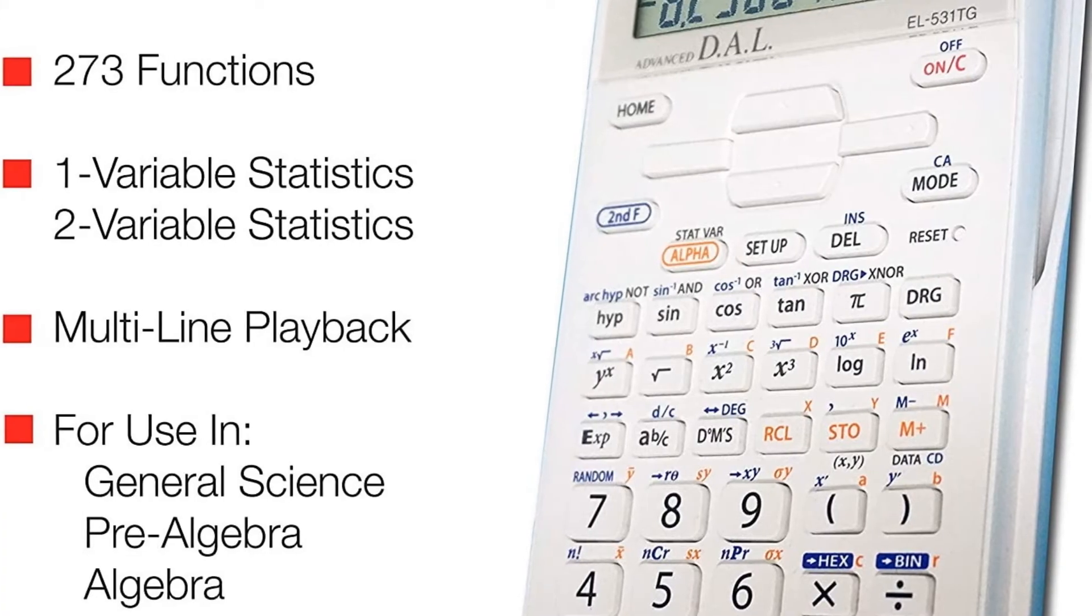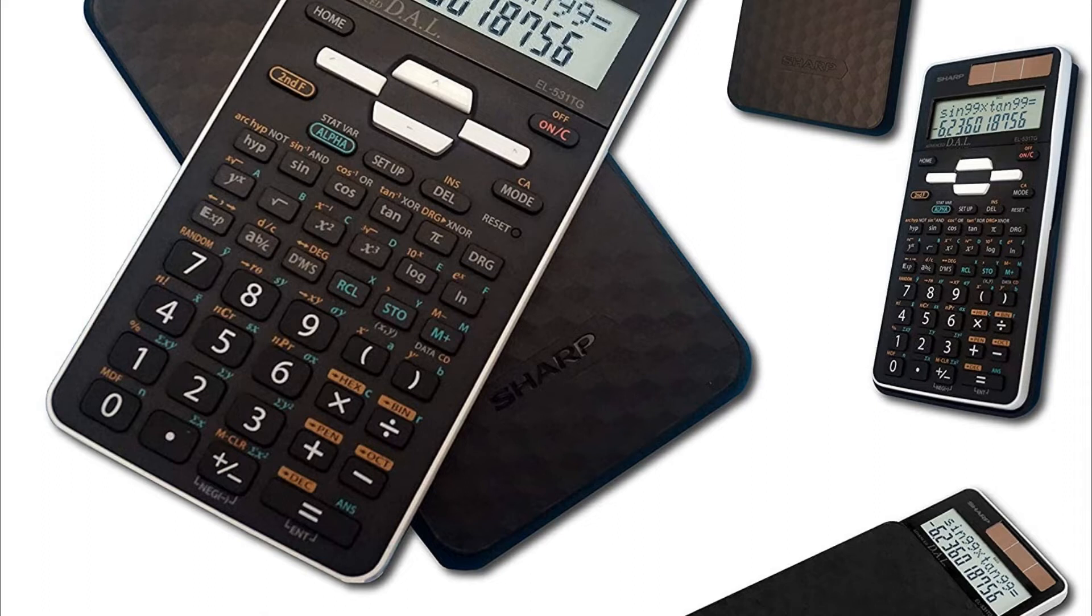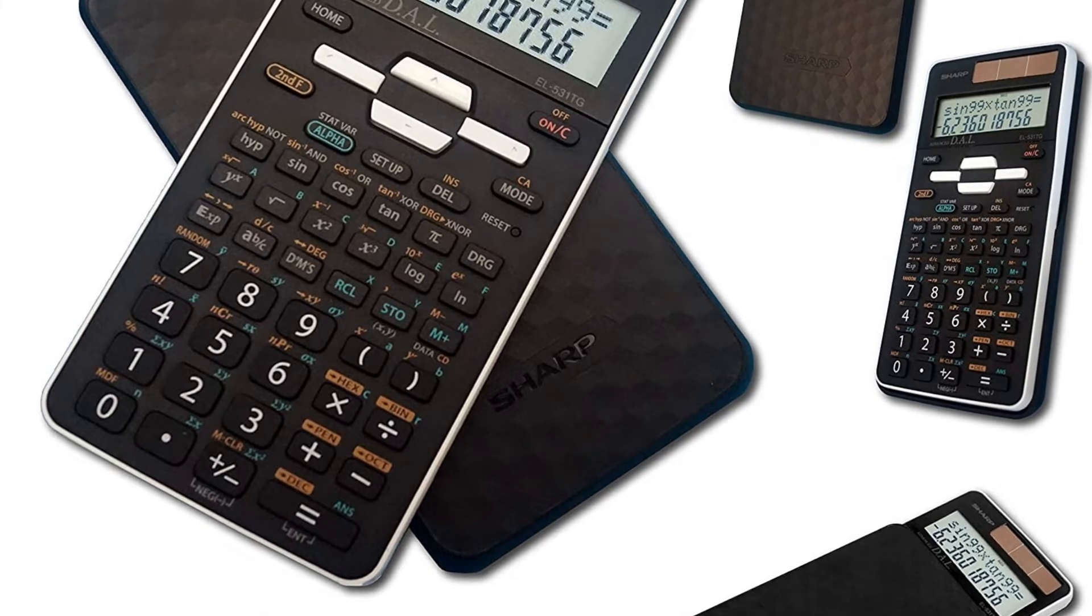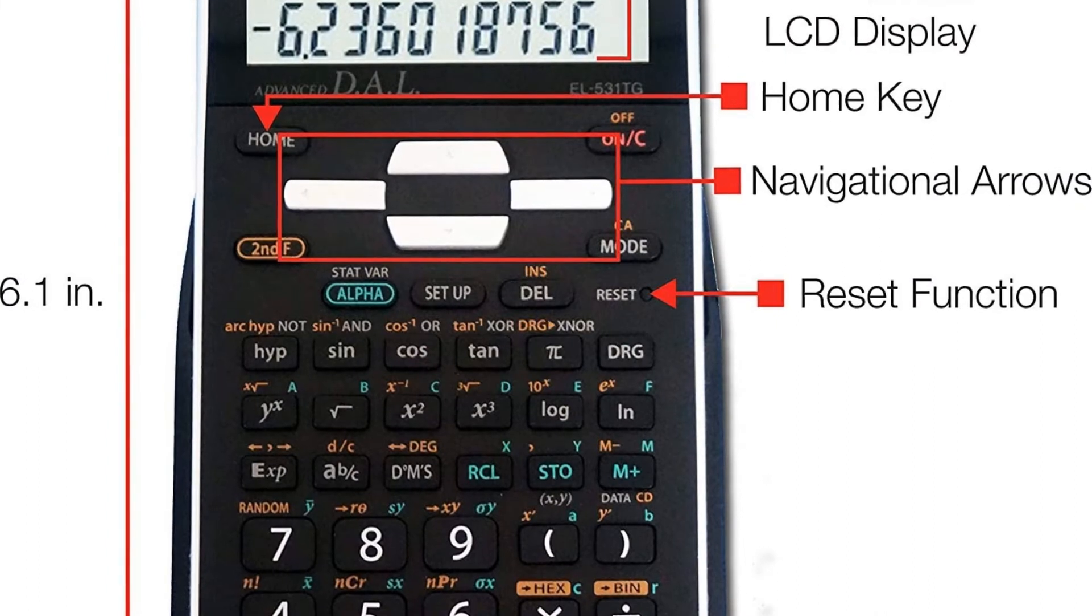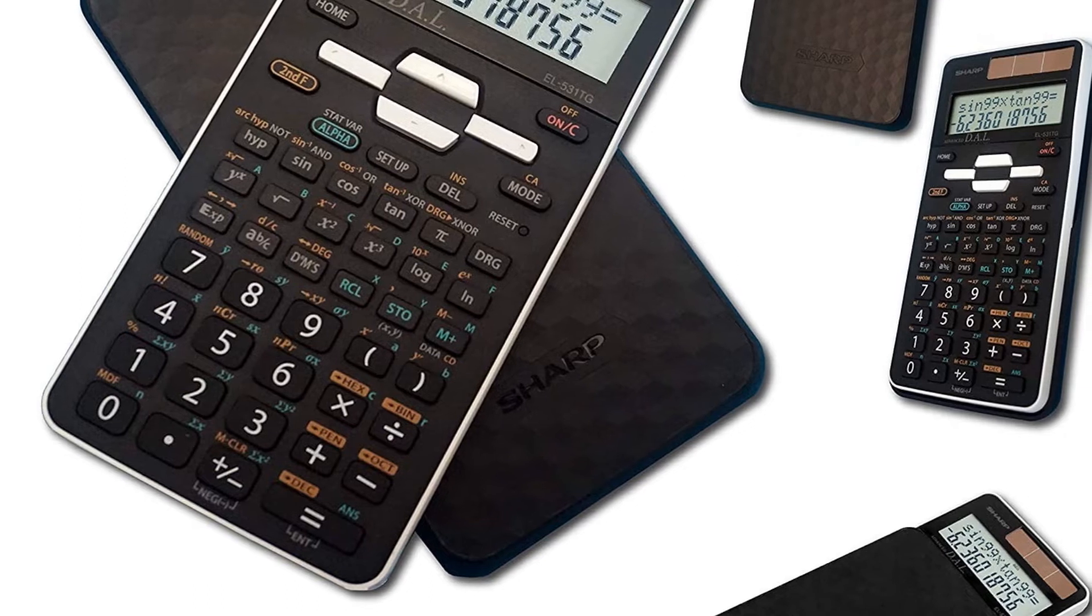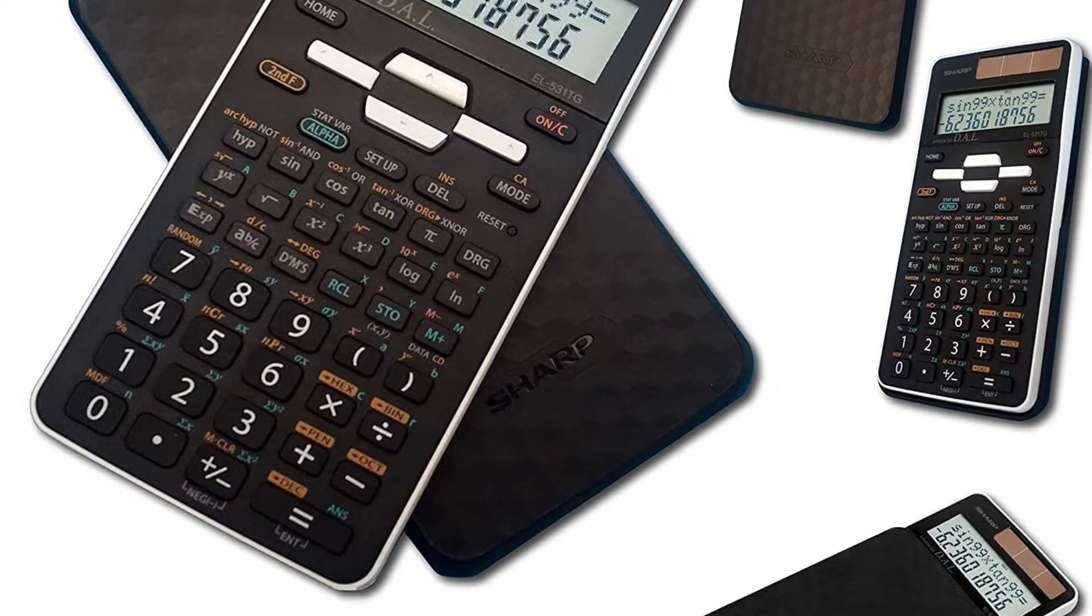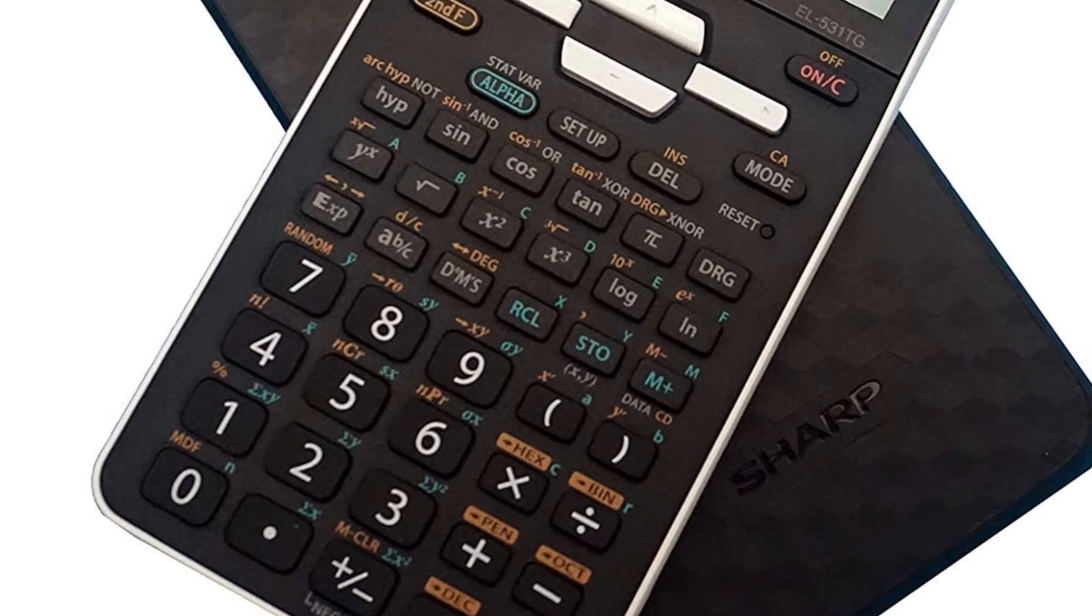Features large 12-digit two-line LCD display perfect for easy viewing and shows calculation entry and result at the same time. Perfect for students studying general math and science, pre-algebra, algebra, geometry, trigonometry, statistics, biology, and chemistry. Direct algebraic logic (DAL) allows calculations to be displayed as written on paper. 273 functions and two modes: normal and stat.